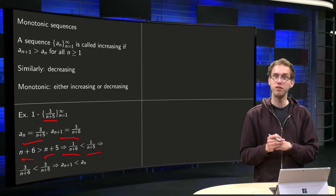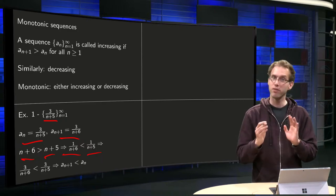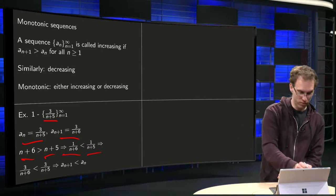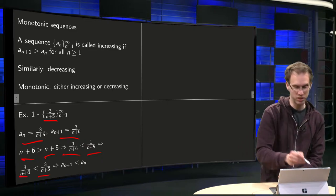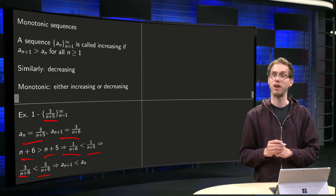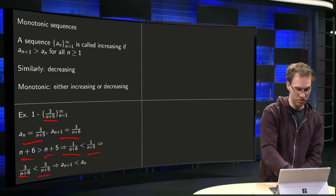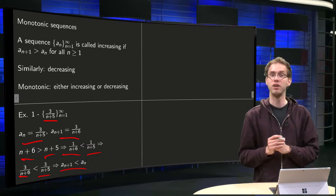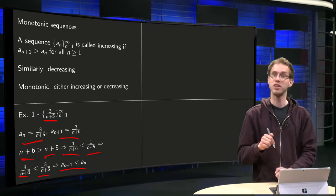Multiplying by 3 does not alter the inequality, so 3/(n+6) is smaller than 3/(n+5) for all n. So you have that An+1 is smaller than An for all n, which means the sequence is decreasing.